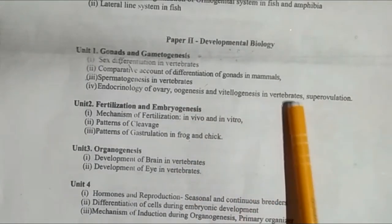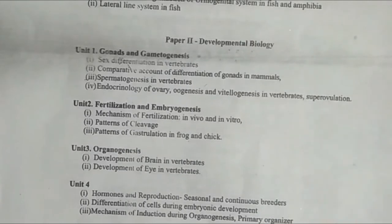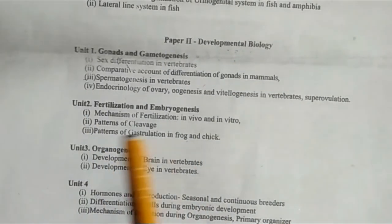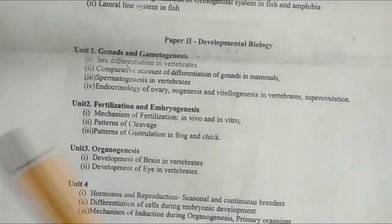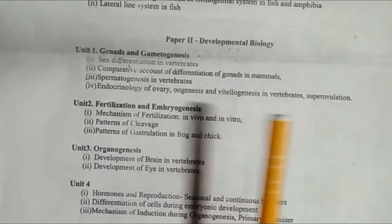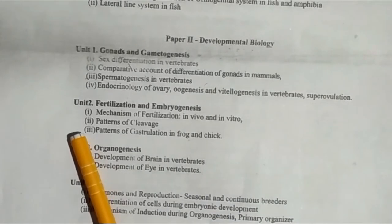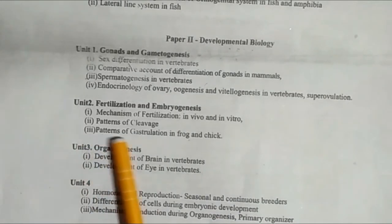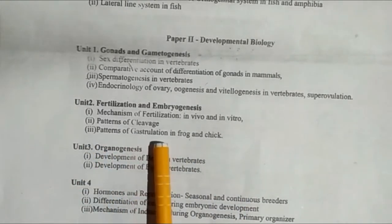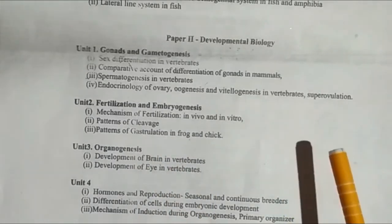Continuing Unit First: vitellogenesis in vertebrates and superovulation. Unit Second covers fertilization and embryogenesis — the mechanism of fertilization in vivo and in vitro, pattern of cleavage, and pattern of gastrulation in frog and chick.